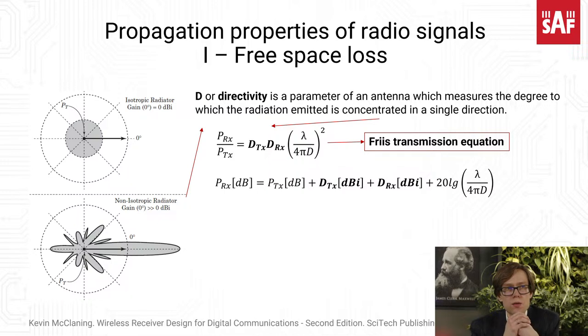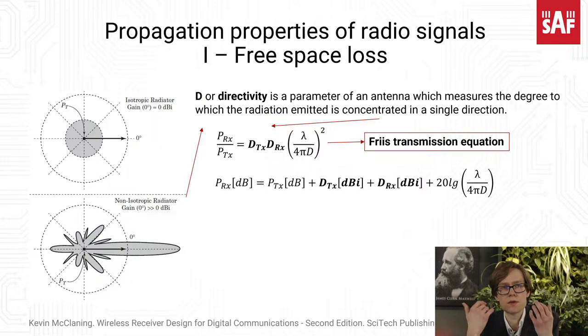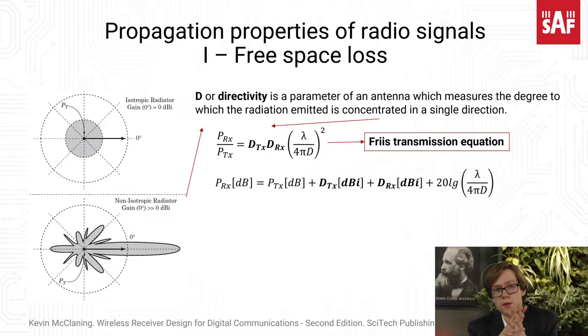Converting this equation to decibels, we get the received signal in dB on the left, then the transmitted signal in dB, plus the directivity or gain of the transmitting antenna, plus the directivity or gain of the receiving antenna, plus a constant that depends on the wavelength, the frequency, and the distance. Intuitively, the total loss depends on both the frequency and the distance through which the signal propagates.